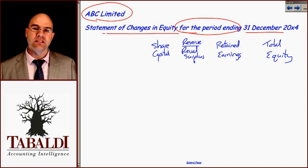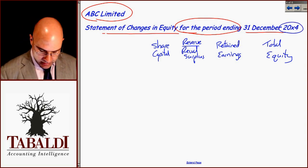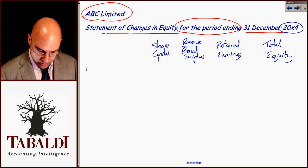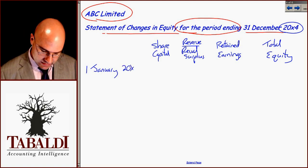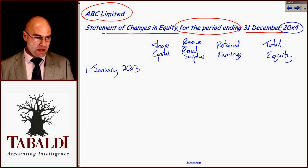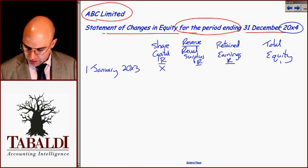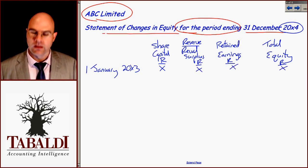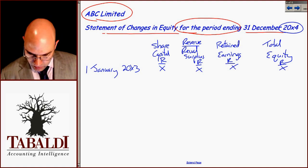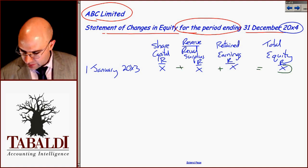I will start off with my opening balance of the prior year. So we're dealing with the 20x4 year — 31st of December is the end — so I must go 1st of January, not 20x4, but the prior year 20x3. That will be my opening balance, and I'll have an amount. Remember to put in that it's all in rands. I put my opening balance down — all of these together must equal the total.